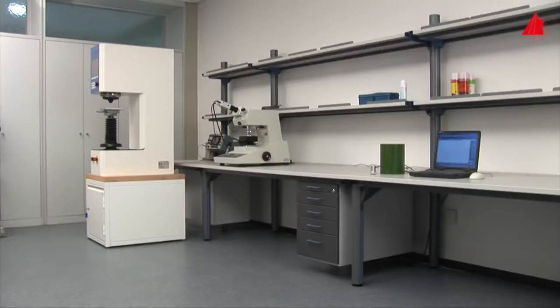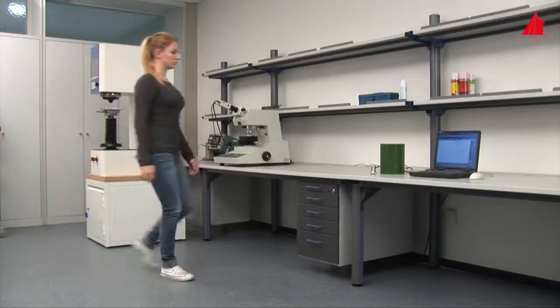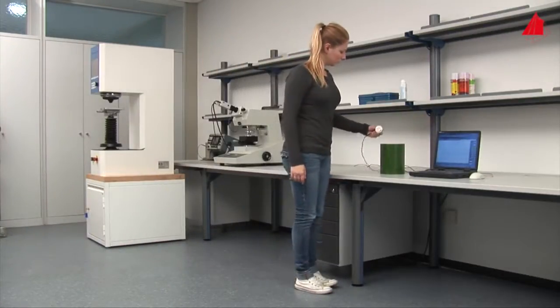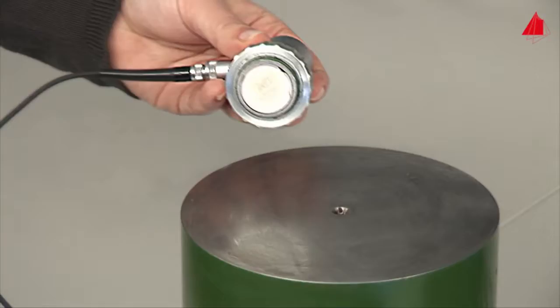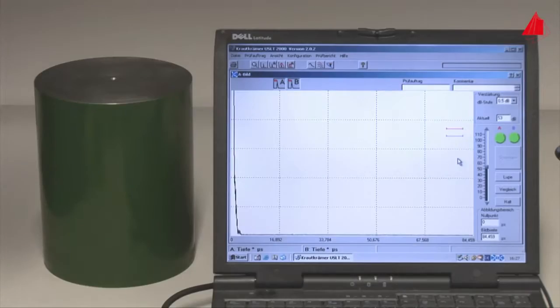In our laboratory, there's a green painted steel cylinder to be found. It contains artificial defects which are invisible from the outside. To track down the defects, the material tester uses the pulse echo method. This is how a typical probe looks like: under the bright wear plate, a piezo electric disc is installed. It can transmit and receive ultrasonic pulses.